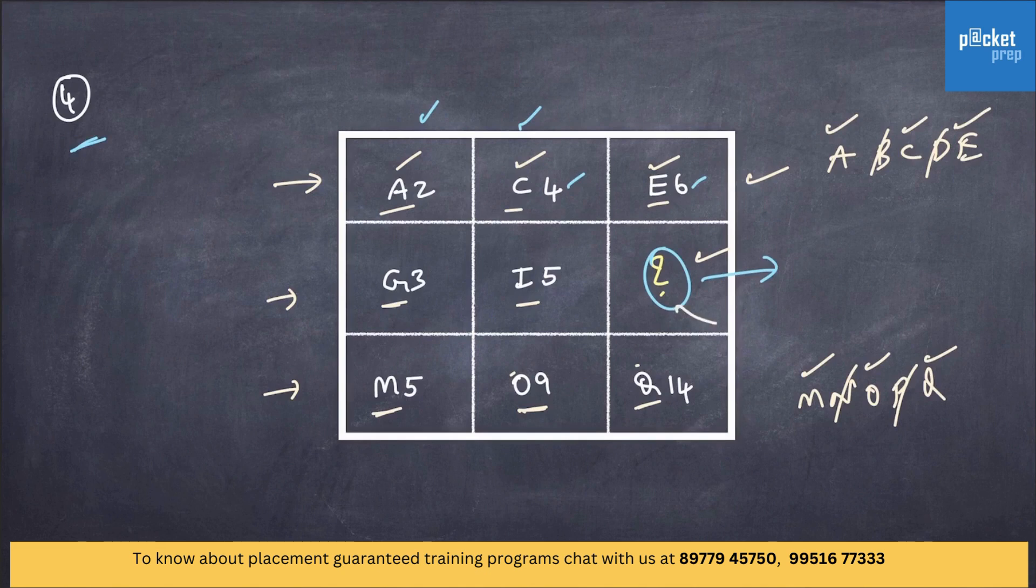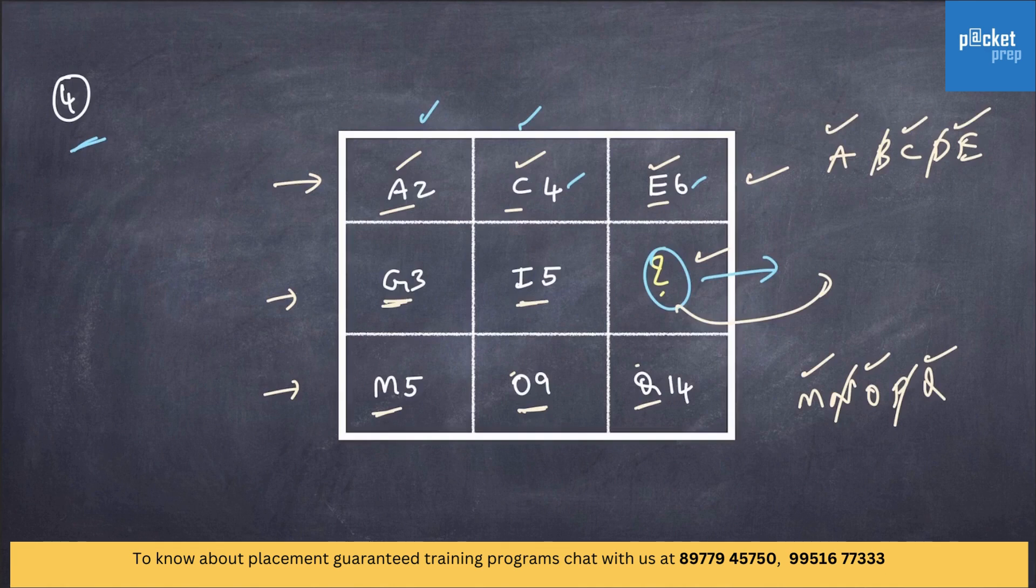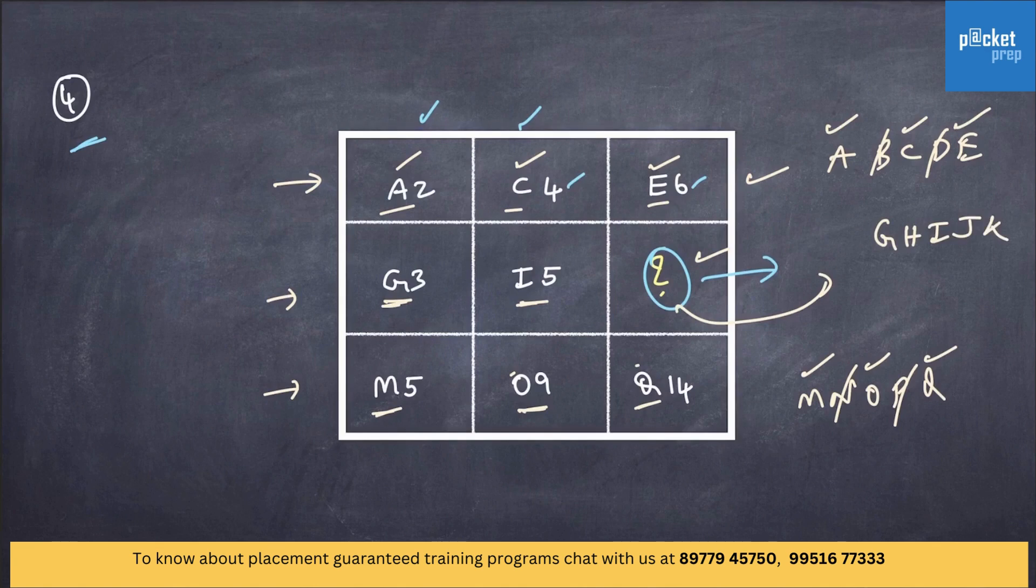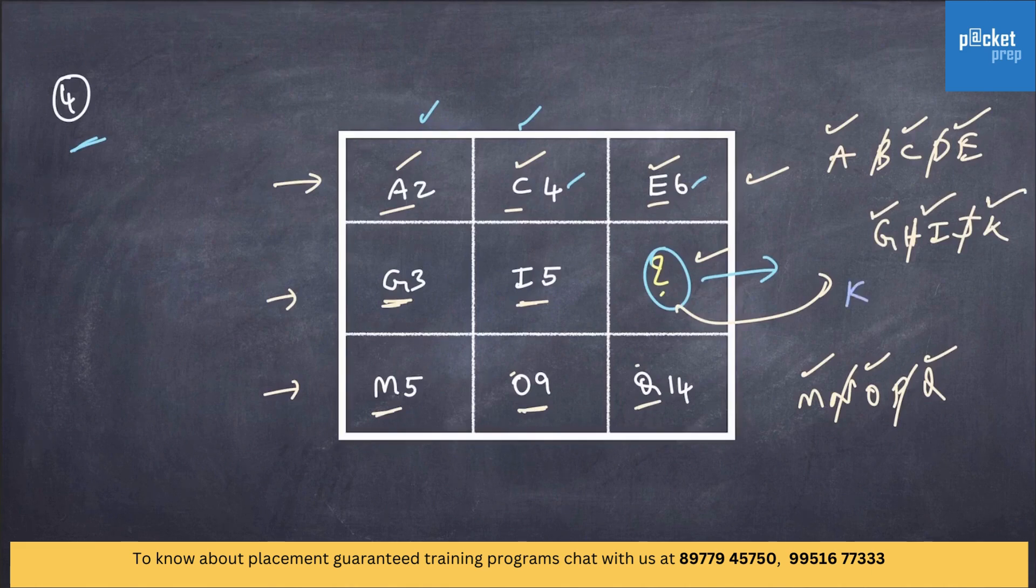Now, what could be the alphabet in this place? G, I. As we all know, G, H, I, J, K. We have G, no H. We have I, no J. So, the alphabet is K. We have got the alphabet. What about the number?